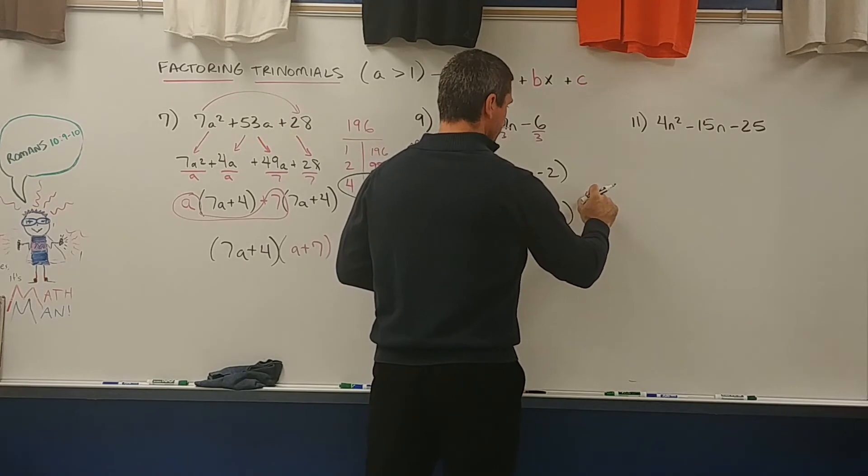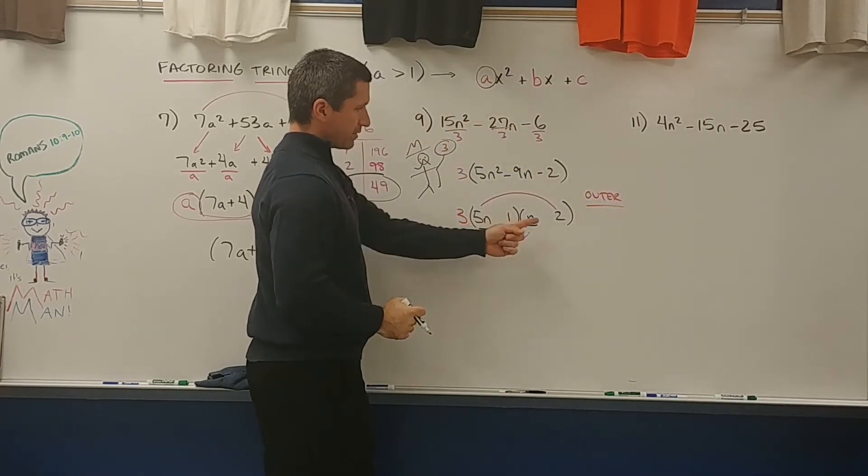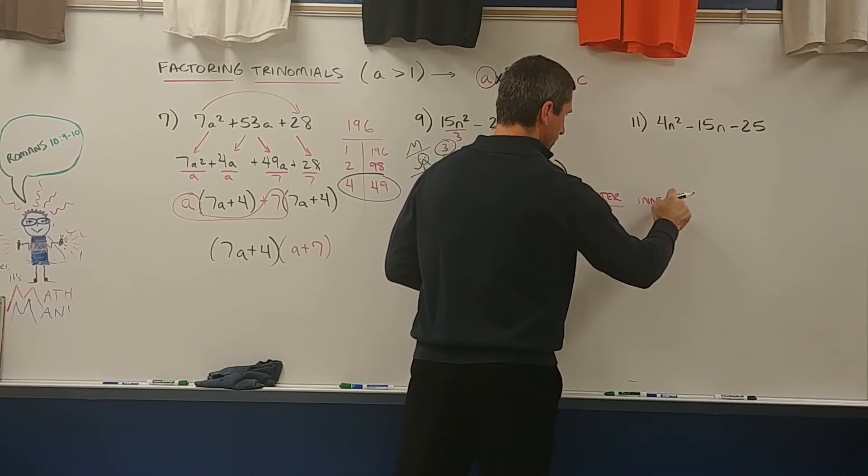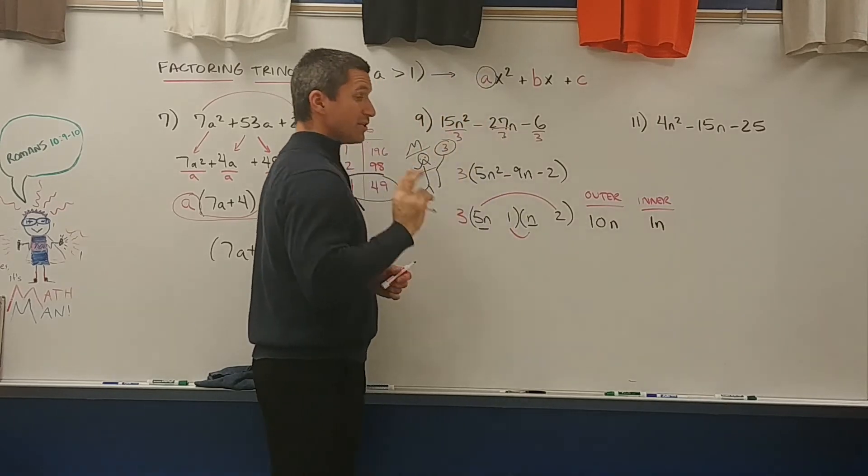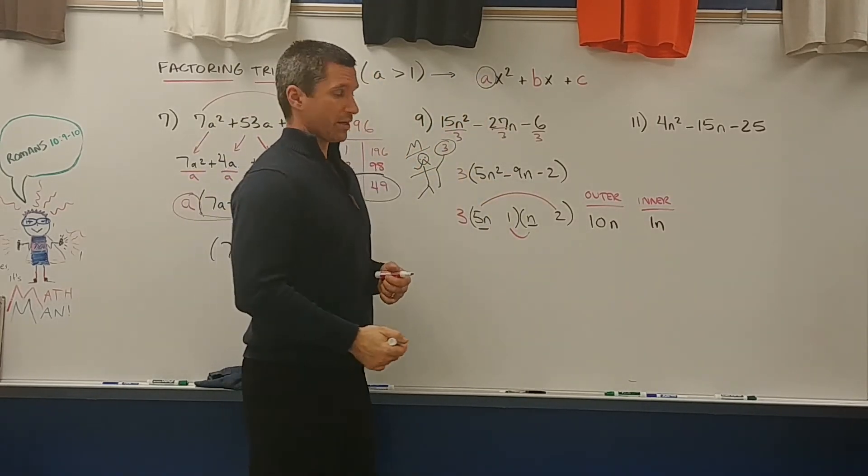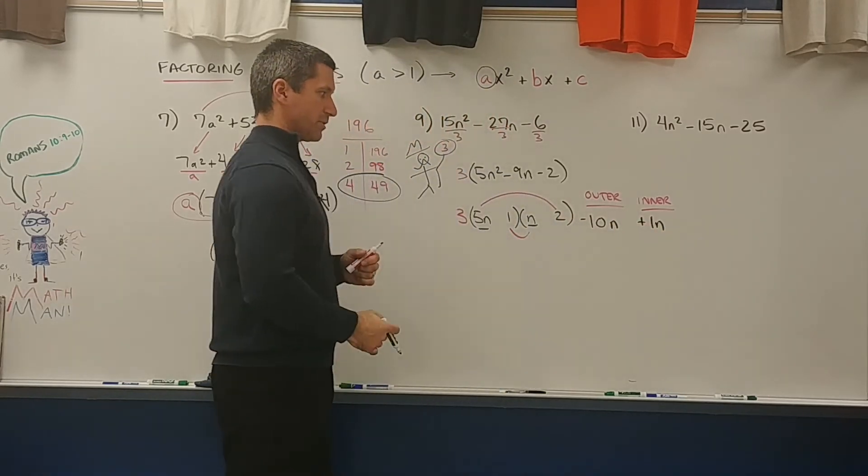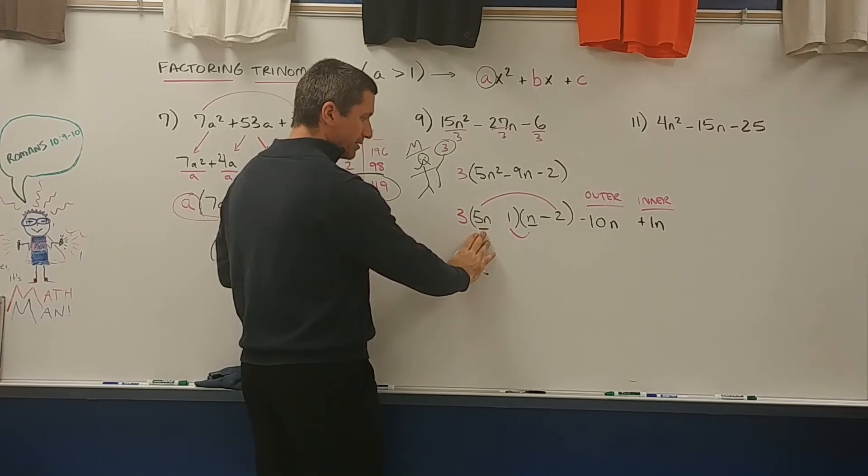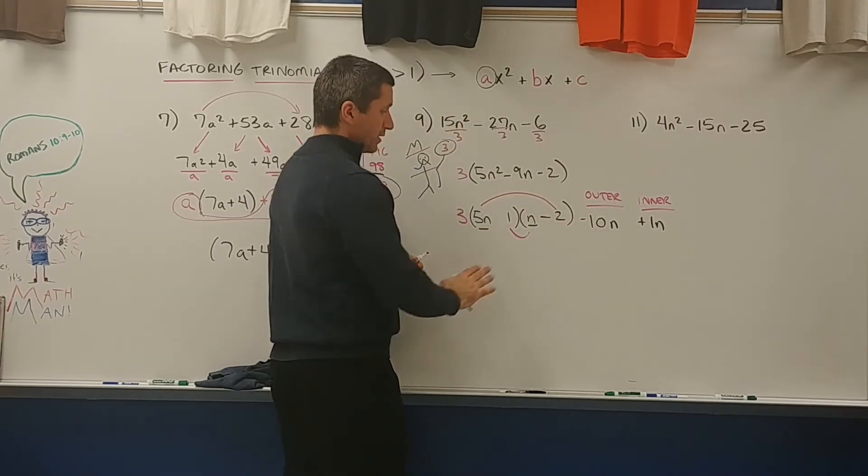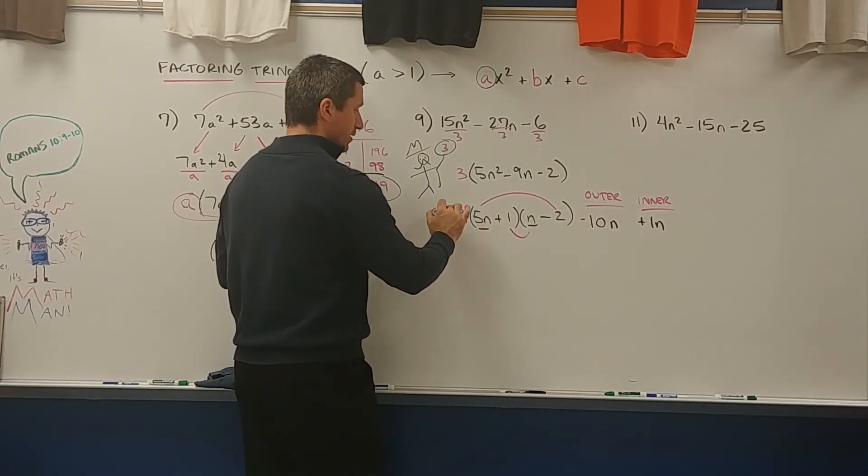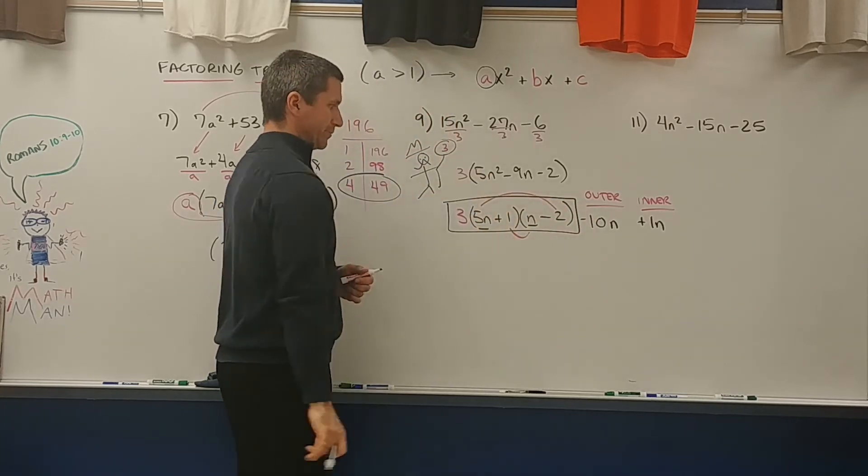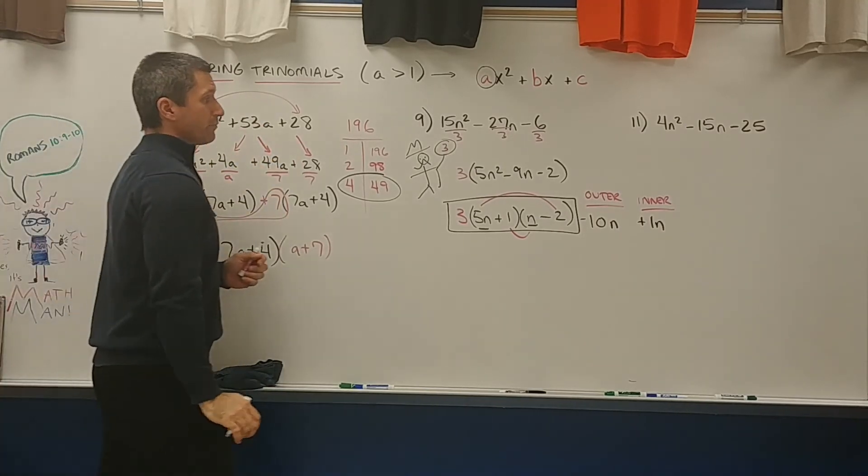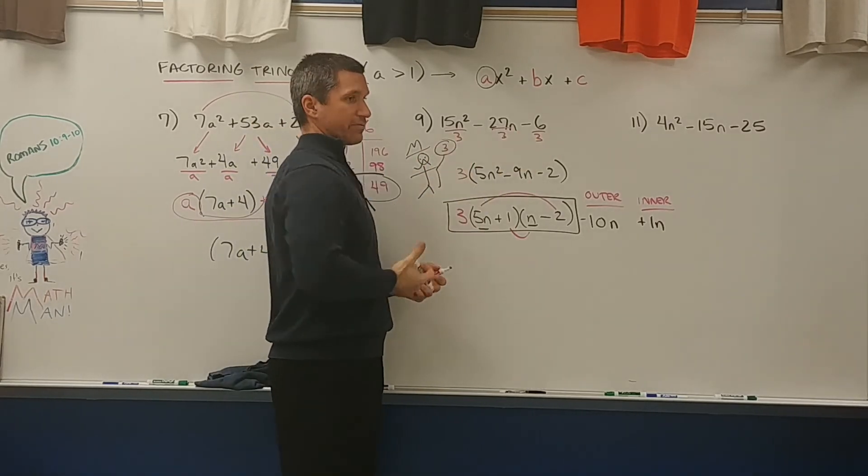So the outer term is 5n times 2. That's 10n. And then the inner term is 1n. Now using those two, can you get negative 9n? Of course you can. You would need a negative 10 and a positive 1 when you add those two terms together. So where do you put the signs? Well, to get a negative 10, you'd have to put a negative right there. Because it would be positive 5 times negative 2 gets you to this number. To get a positive 1, you'd have to have a plus here, okay? So this is the correct factorization of that trinomial. Now that's guess and check, okay? So we have factor by grouping. Group these two, group the back two, go for it. We have guess and check, where you're just doing this balancing act, factoring out a GCF always, if you can.